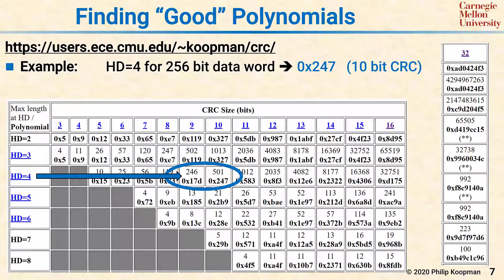If you look at the Hamming distance 4 table row, you go out and see there's one at 246 bits, but that's smaller than 256. But there's another one at 501 bits. 501 is larger than 256, so a 10-bit CRC will get you the Hamming distance you're looking for, because it will give you Hamming distance 4 or better for everything up to and including 501 bits. The polynomial in this case is hexadecimal 247.